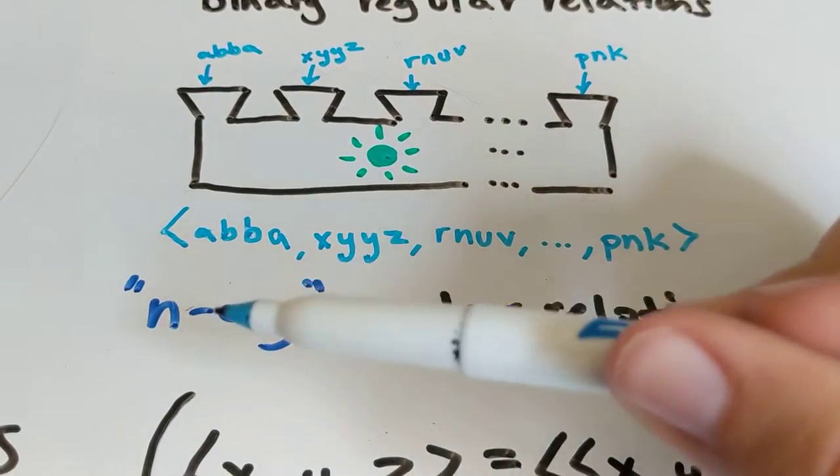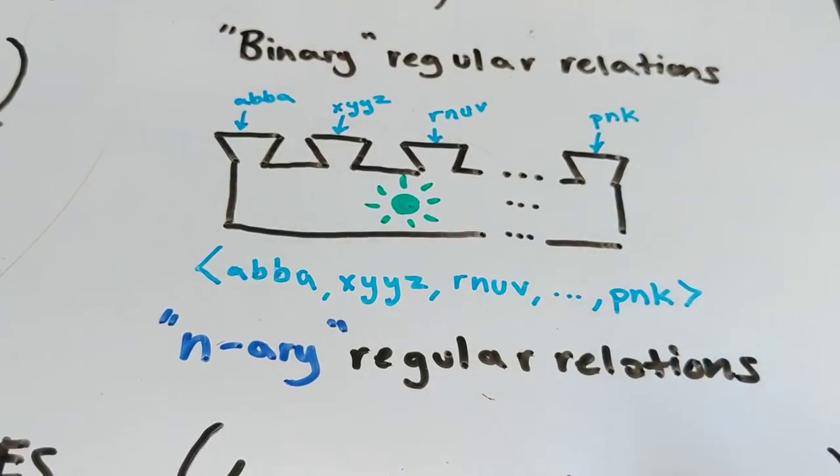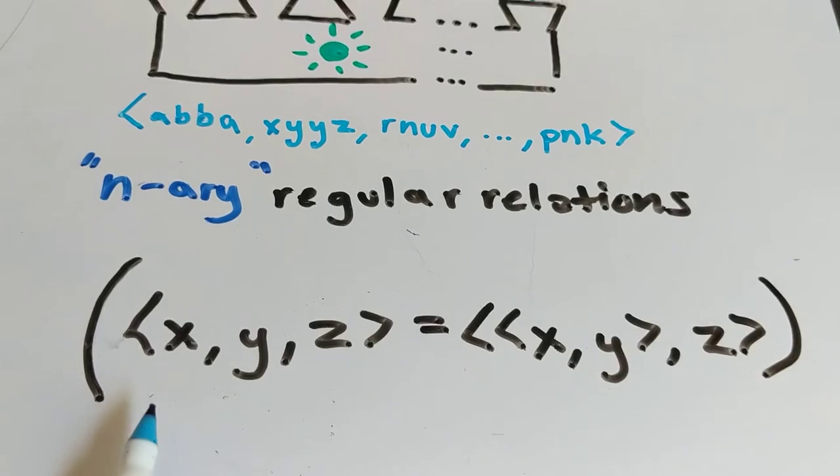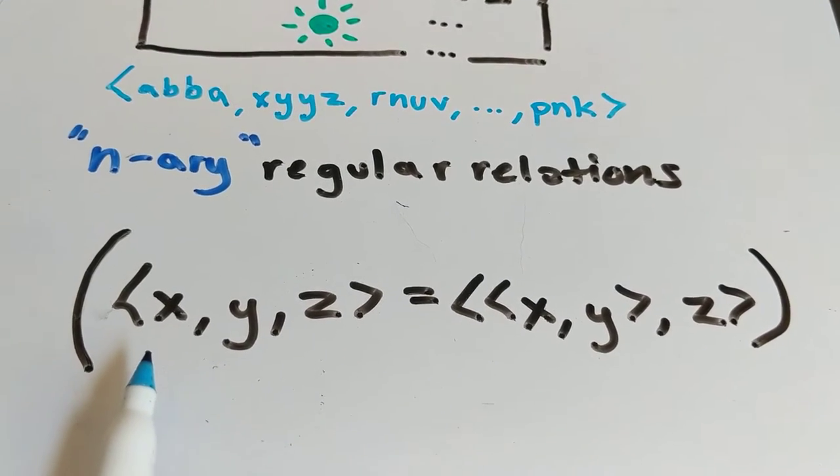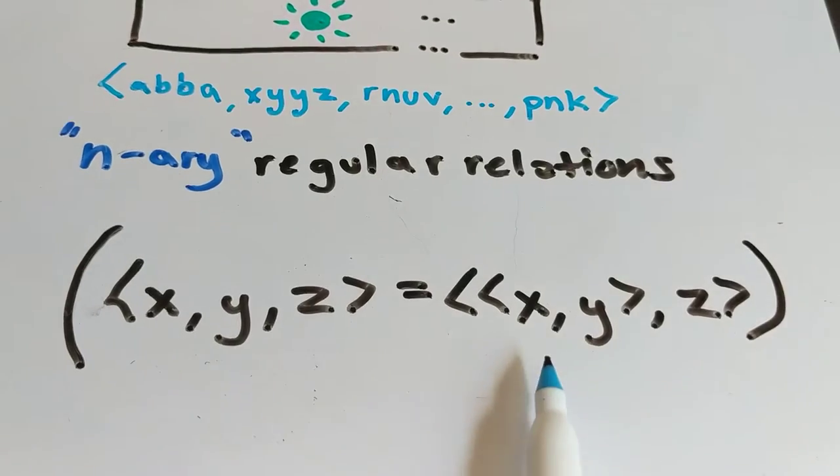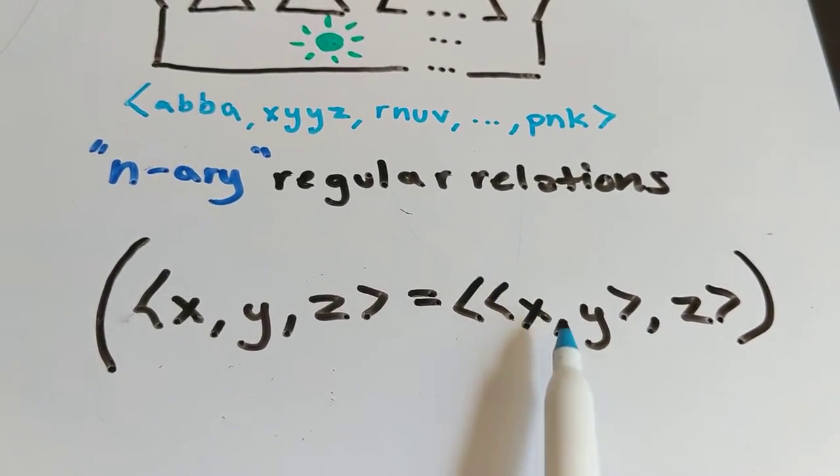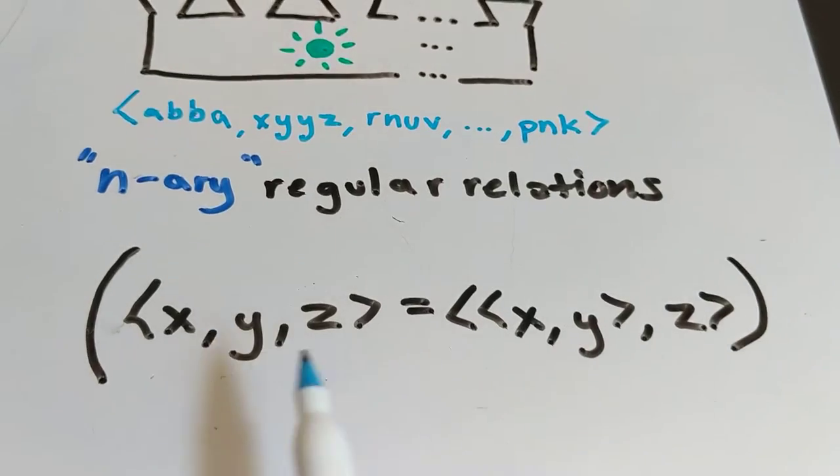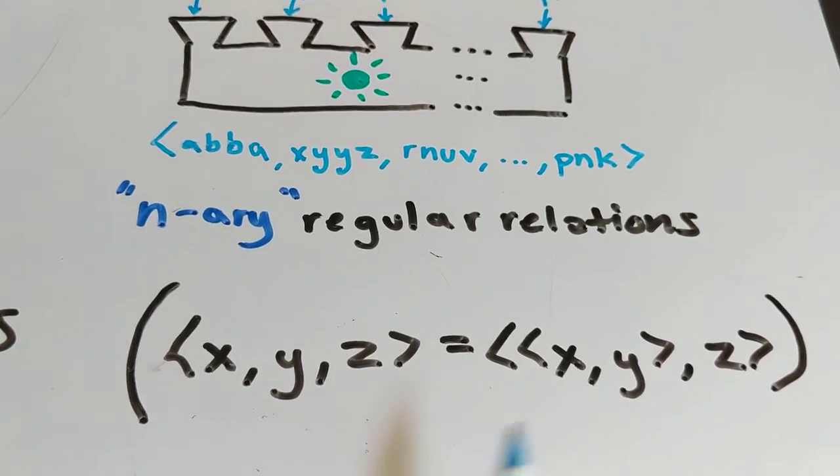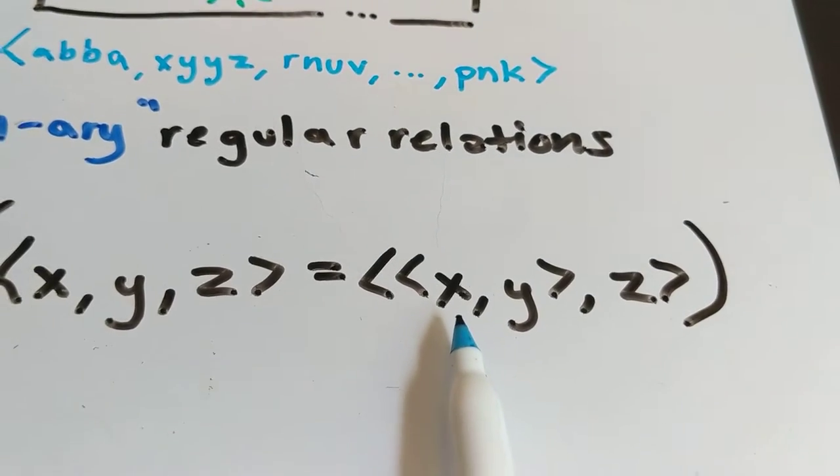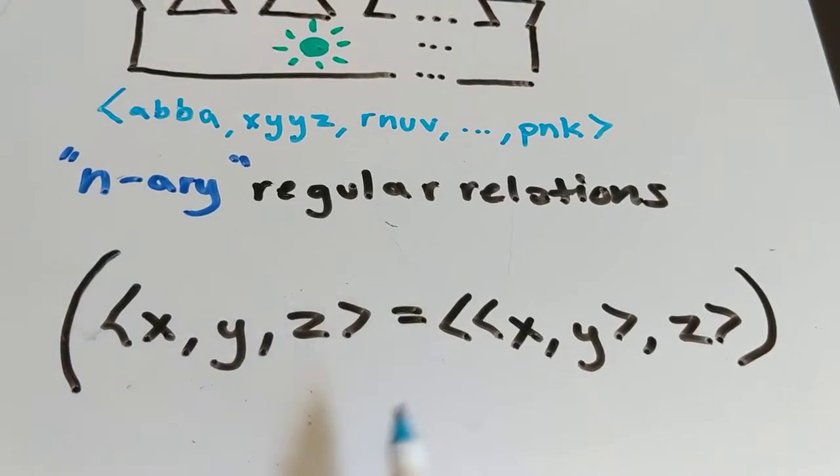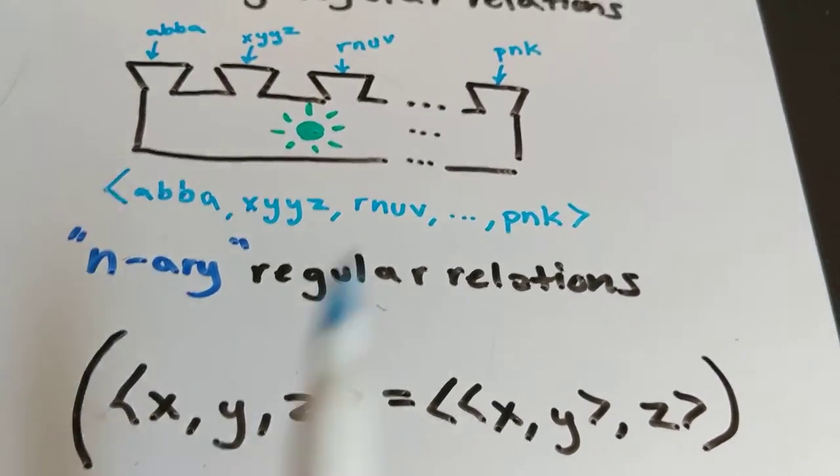One thing I want to remind you of though is that when we were talking about ordered pairs to begin with you can have an ordered triple like this that can always be expressed as an ordered binary pair. So you can always express triples or quadruples or quintuples as a pair XY paired with Z.